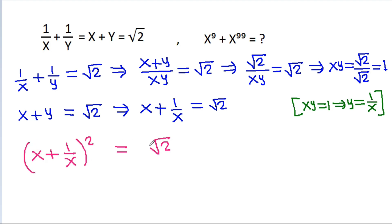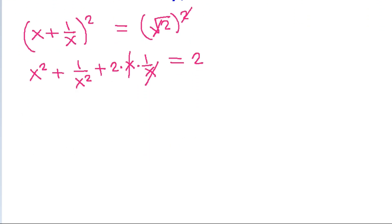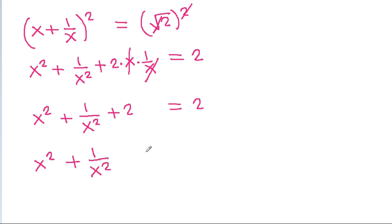And if we square both sides, then it will be x squared plus 1/x squared plus 2 times x times 1/x, that is equal to square root of 2 squared, which is 2. And x will get cancelled, so x squared plus 1/x squared equals 2 minus 2, which equals 0.